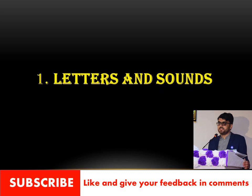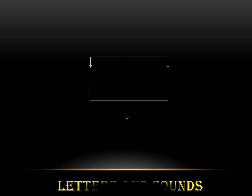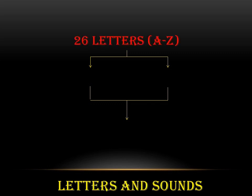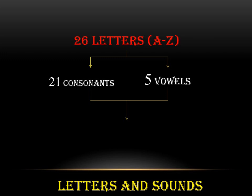We all know that there are 26 letters, A to Z alphabet, in the English language. These letters are of two types: the first one is consonants, which are 21 in number, while the other five letters are vowels.